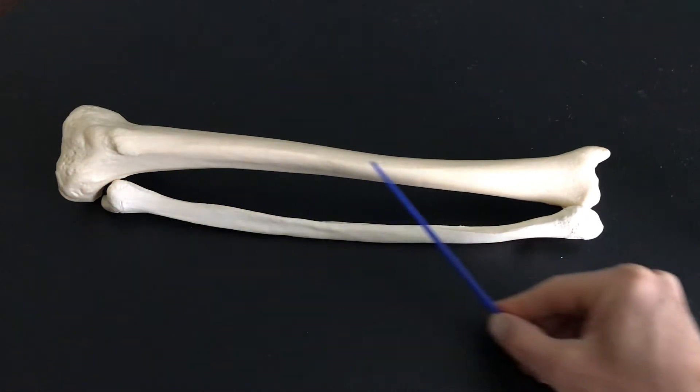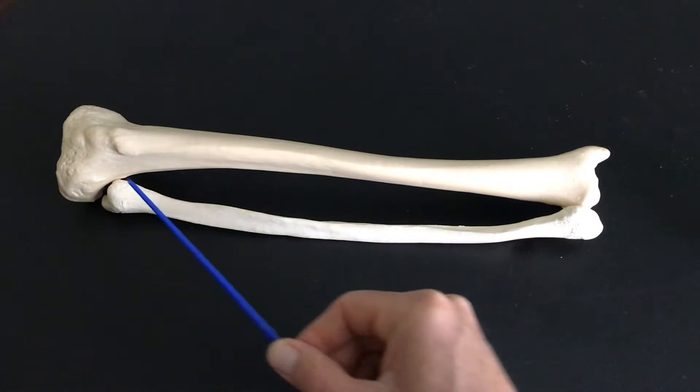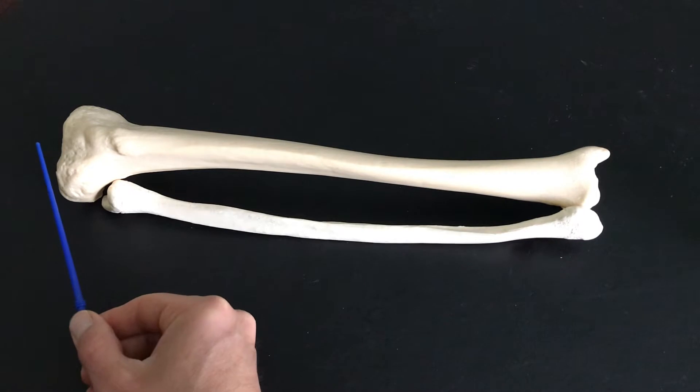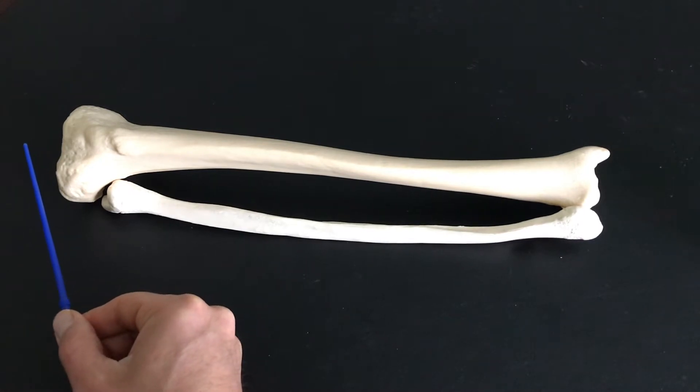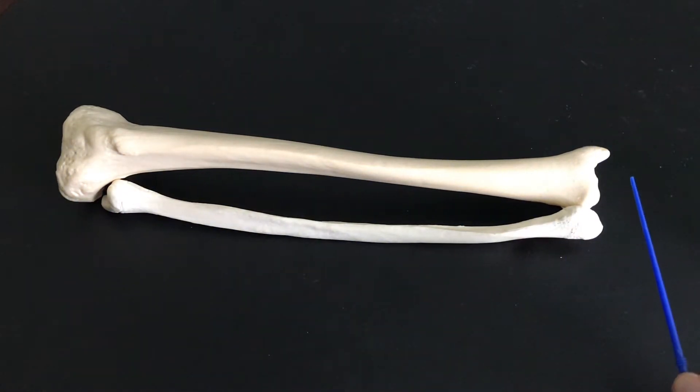Bones of the leg: tibia, fibula. These are the bones of your leg, and the way that I have it set up here, your knee would be here, this is the superior end. Your feet would be down here, this is the inferior end, so you can see how they articulate together.